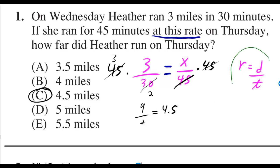The rate formula is distance over time. So her rate on Wednesday was 3 over 30. Her rate on Thursday, X over 45.